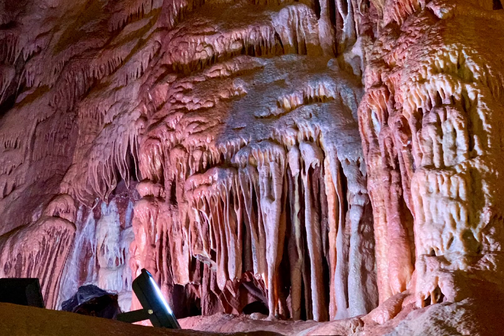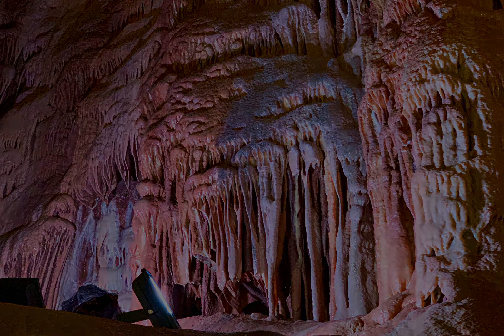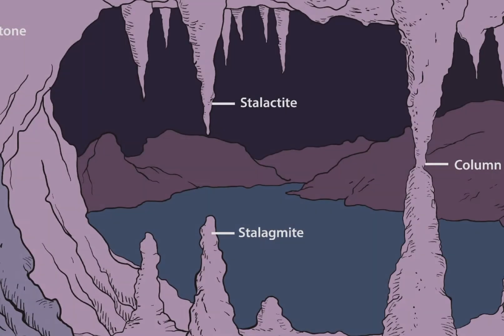Stalagmites and stalactites are both natural wonders that come about as a result of slow precipitation of minerals coming from water that seeps through the cave ceiling or the floor. The distinction between them is that stalagmites are the formations that grow upward from the cave floor, while stalactites hang downward from the cave ceiling. Both are formed by the same process but in opposite directions.